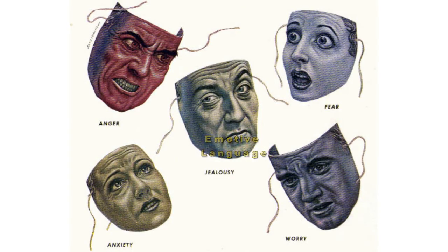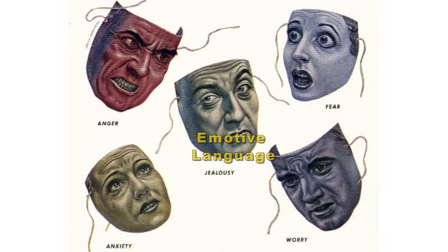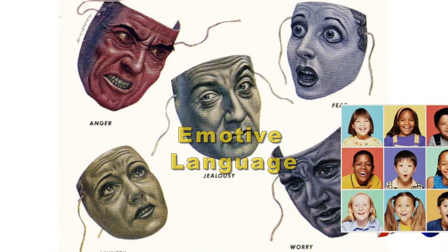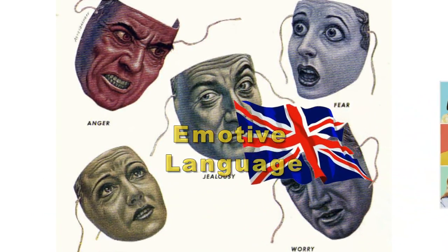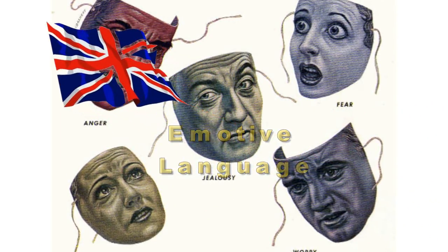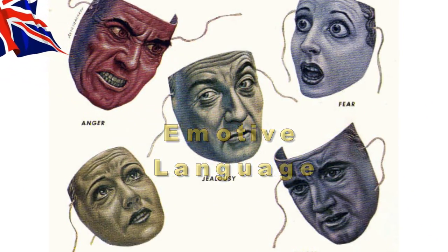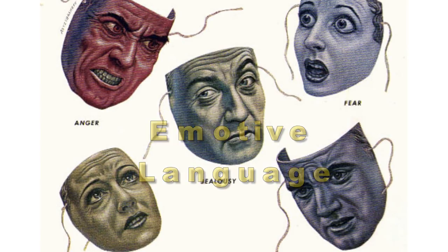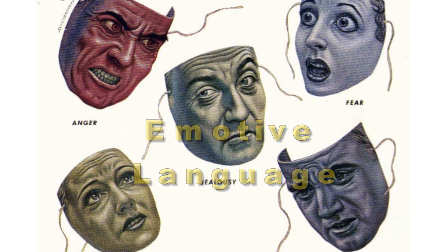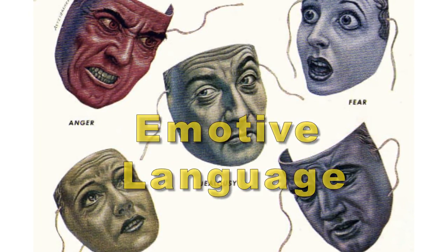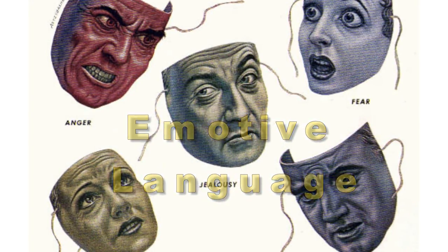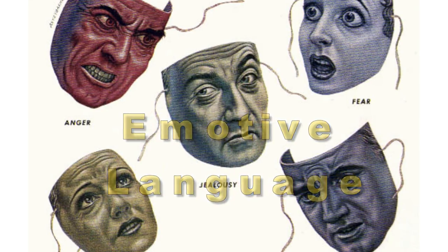Emotive language uses phrases and examples which are intended to provoke an emotional response. Subjects like children, parents, national pride, religion, crime and security are emotive. Using these unnecessarily as arguments can manipulate the audience's emotions. People tend to trust their emotional responses. Strong emotions are usually a signal to the body to act quickly rather than slow down and use reasoning. If a person were to provoke the audience's emotions, they would become less critical of the reasoning. Where subjects are emotive, it is especially important to check the underlying reasoning carefully.